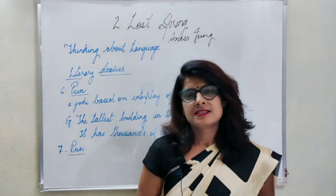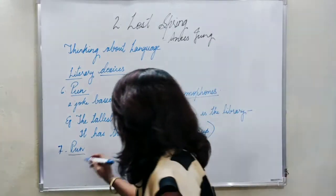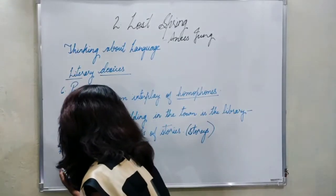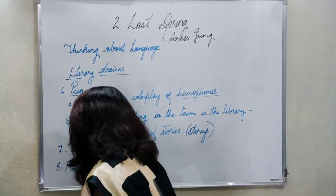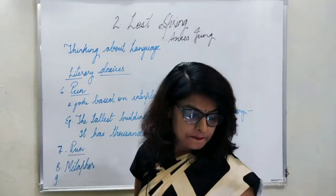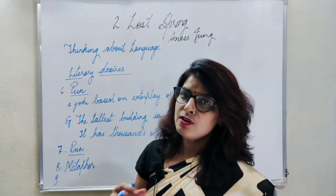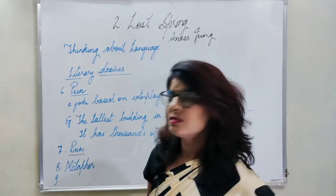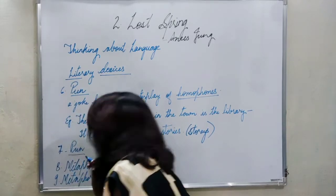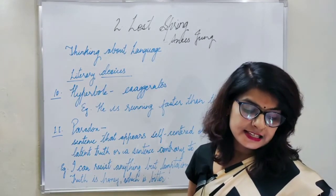The eighth sentence is 'web of poverty.' This is straightforwardly metaphor, because poverty is directly called a web instead of saying 'poverty like a web.' The ninth sentence is 'scrounging for gold' — instead of saying 'scrounging for valuable things,' the author directly used 'gold,' so this is also metaphor.